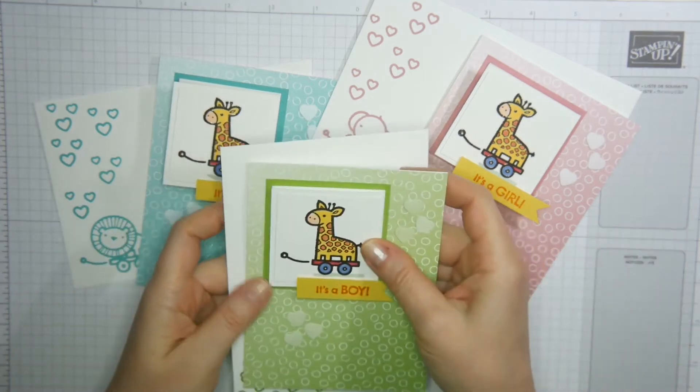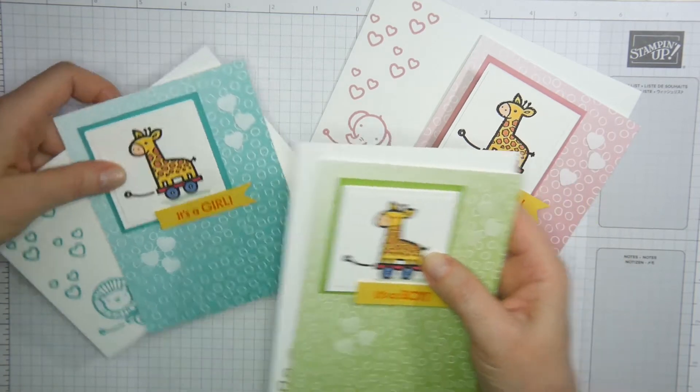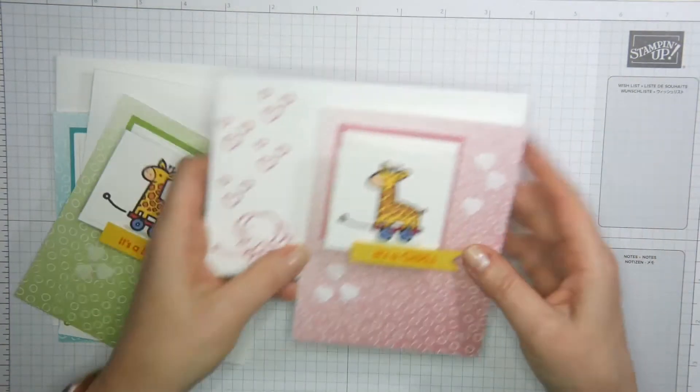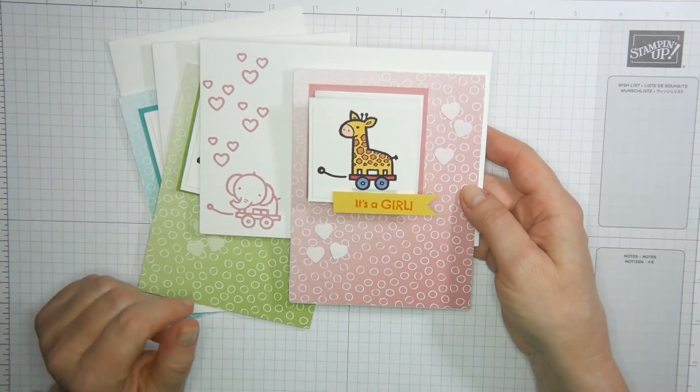I've gone with less traditional colors. This is Granny Apple Green and this is Bermuda Bay. And of course, in Rococo Rose is nice too, but that's more a girly color.